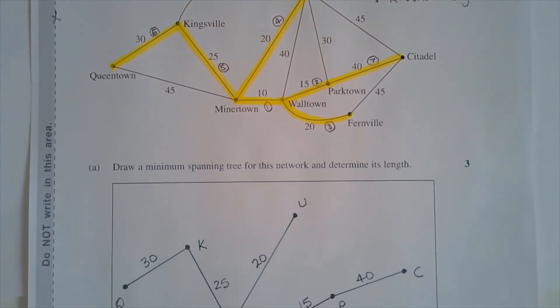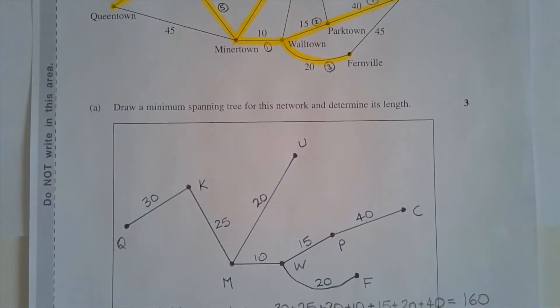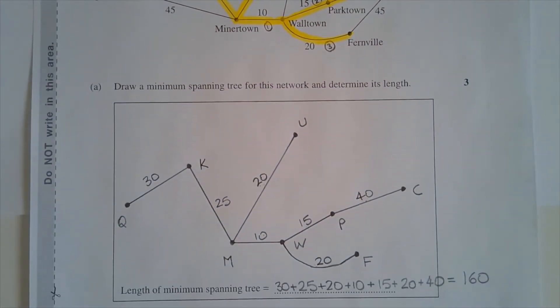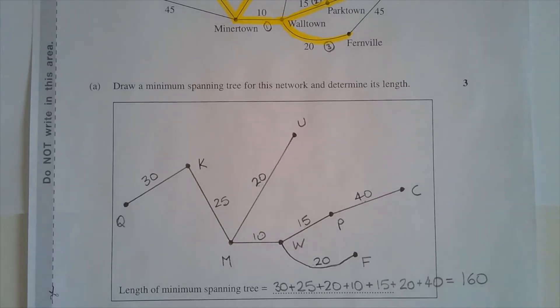Now drawing the minimum spanning tree might look something like that. And the length of the minimum spanning tree is just the sum of the edges that were chosen, and that equals 160 minutes.